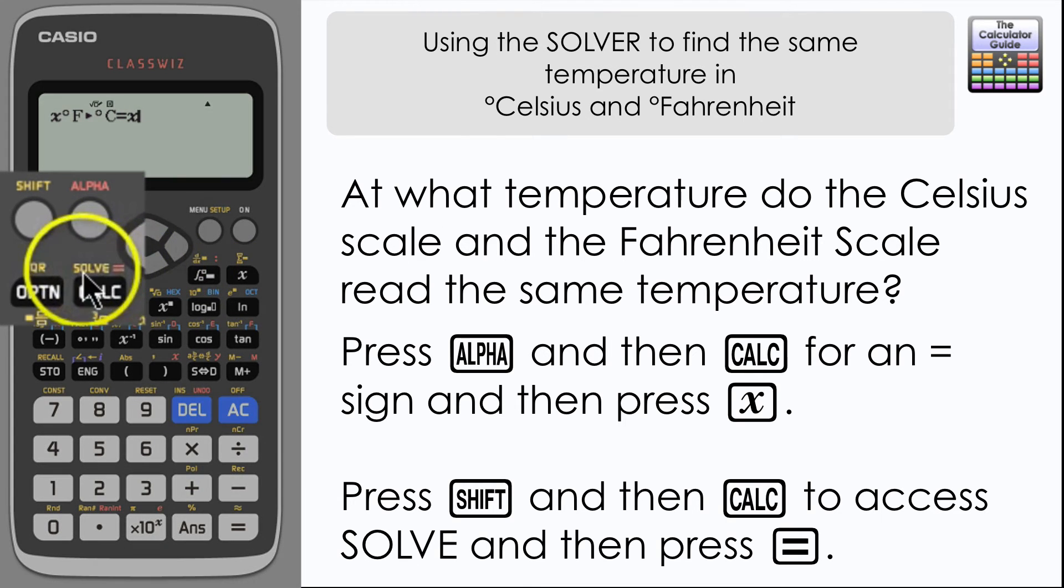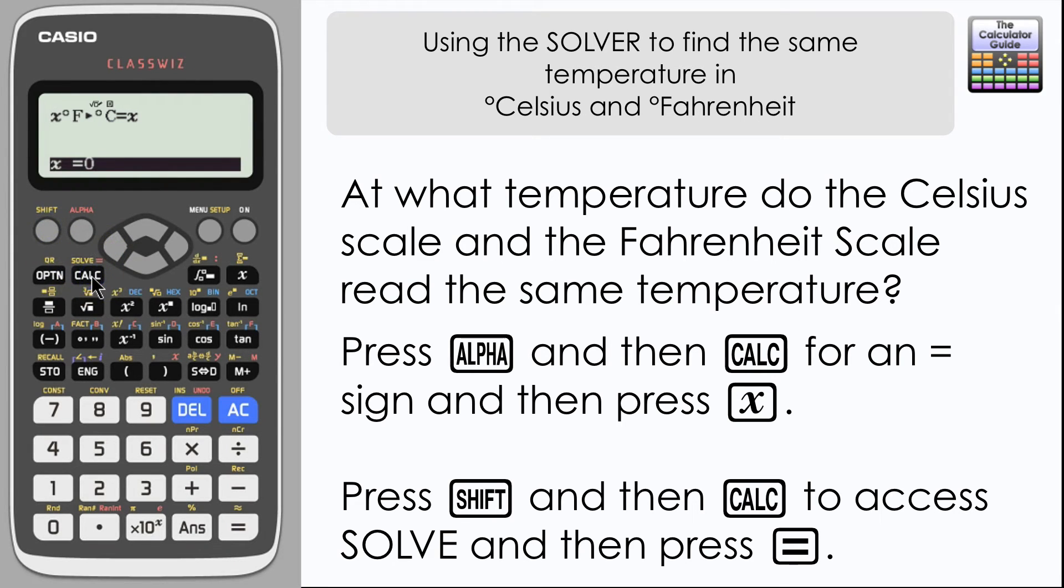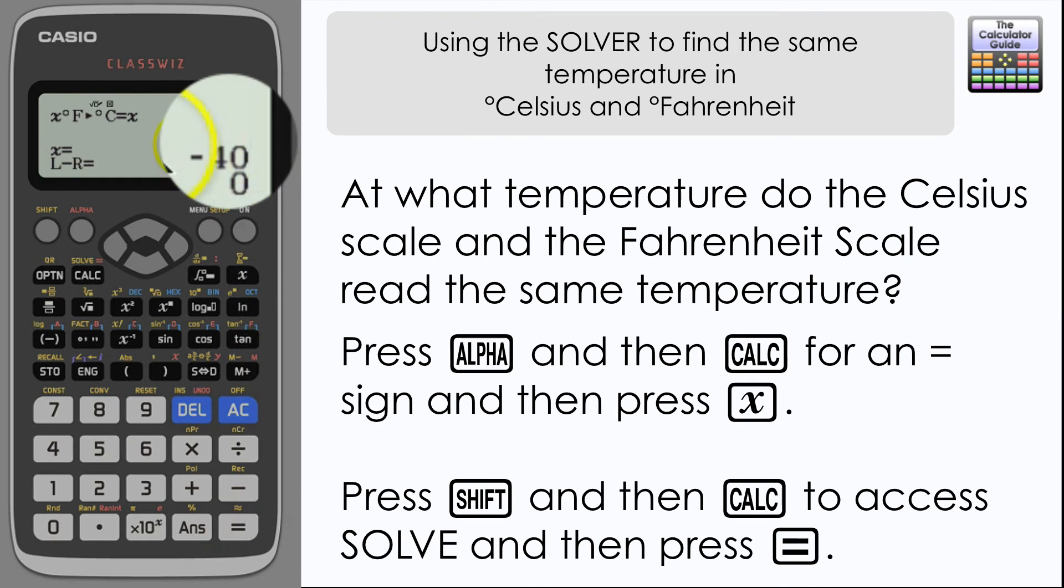In order to solve this, I need to press shift and then calc to access the solve function, and then press equals to resolve that. Here we have a solution: X equals negative 40 degrees. So negative 40 degrees is the same temperature in degrees Celsius as it is in degrees Fahrenheit.